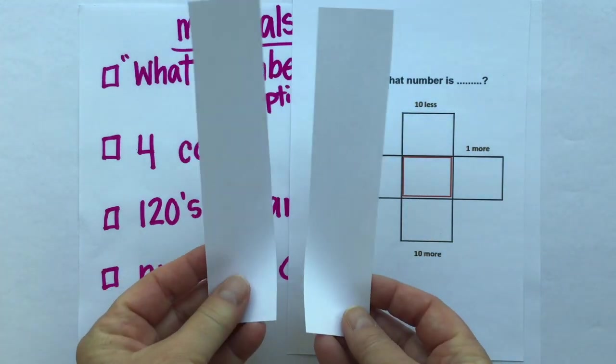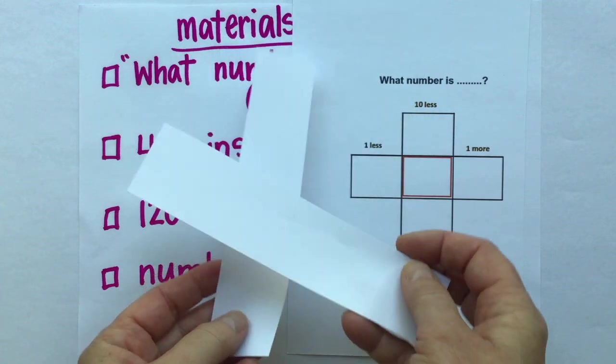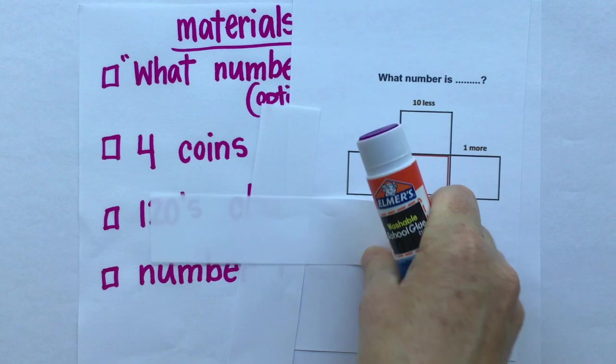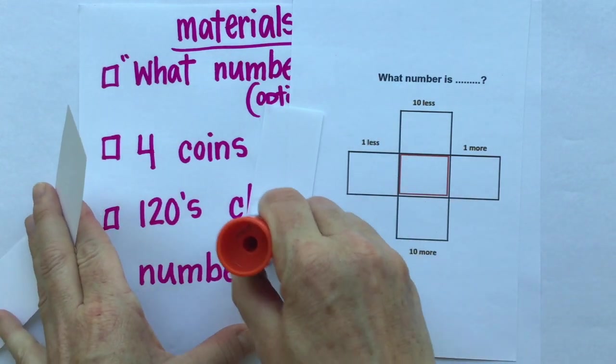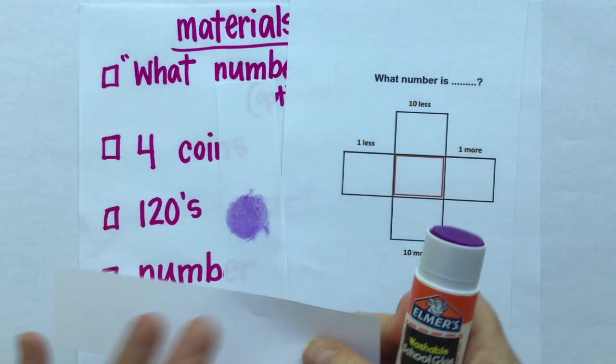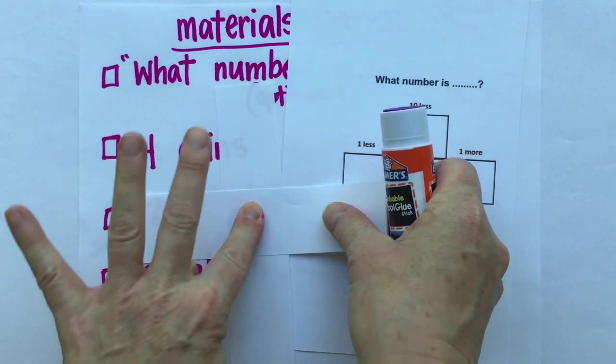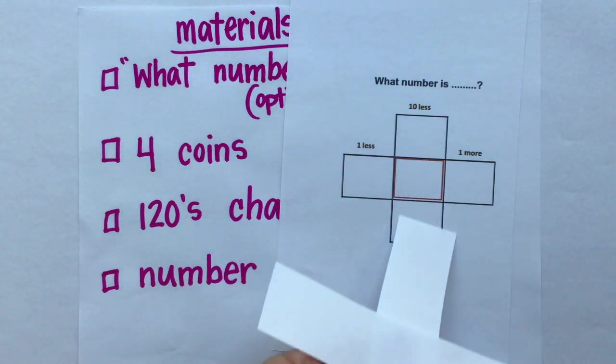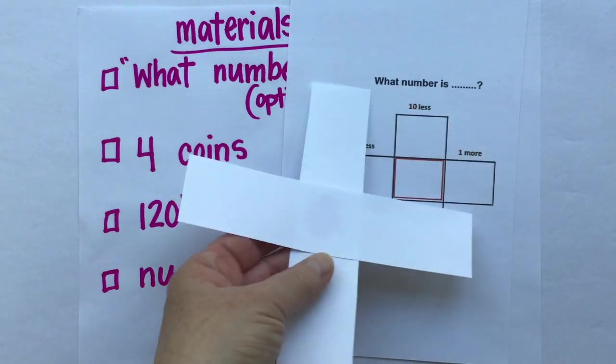You can cut two strips of paper that look just like this, and we're going to put the pieces of paper together to make the shape of this game board. You can just glue your two pieces of paper together to make the shape that you see here. This is the shape we're going to be using with our hundreds chart.